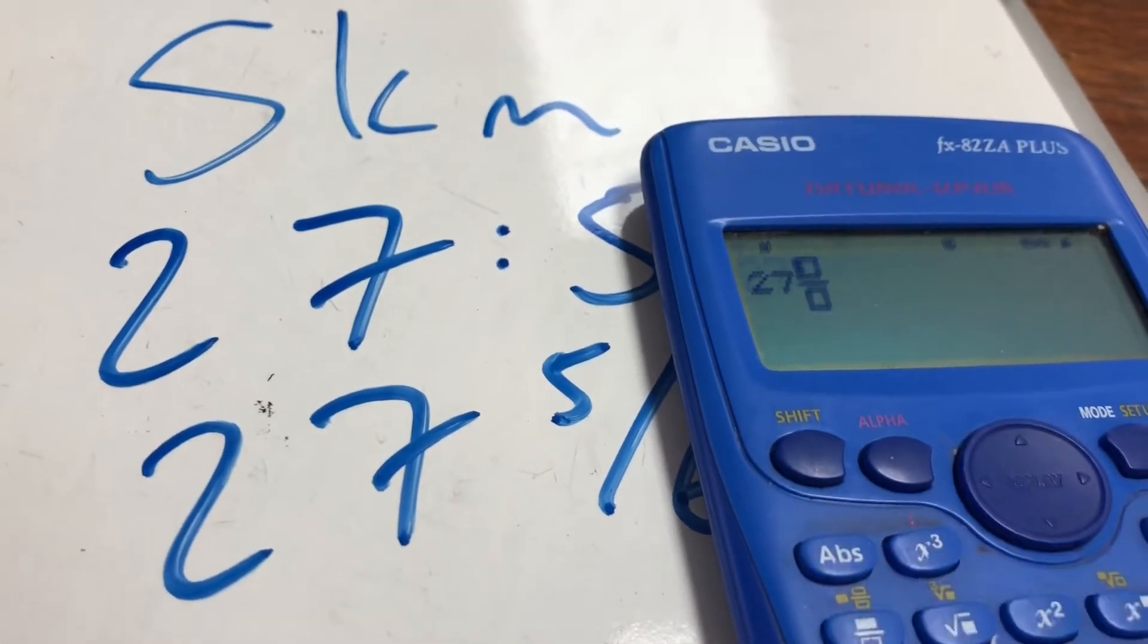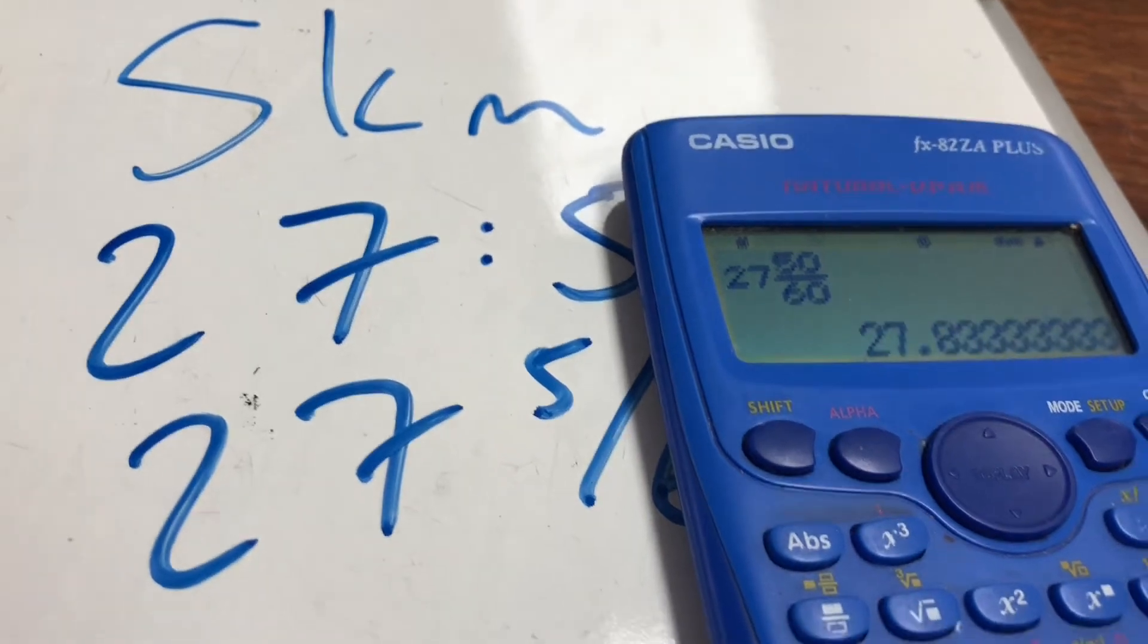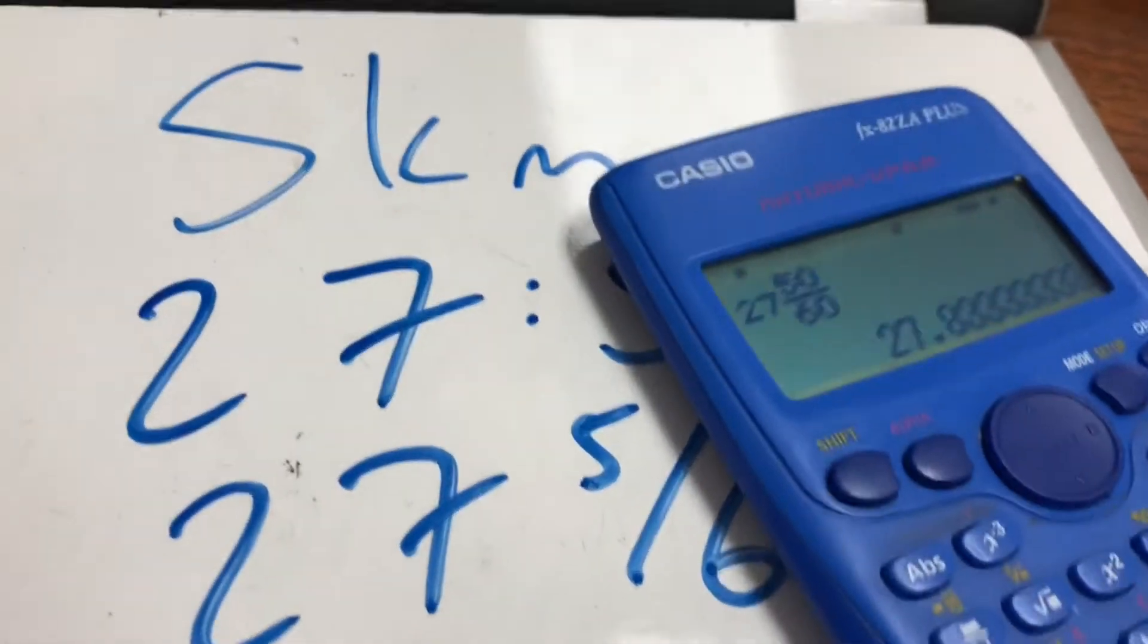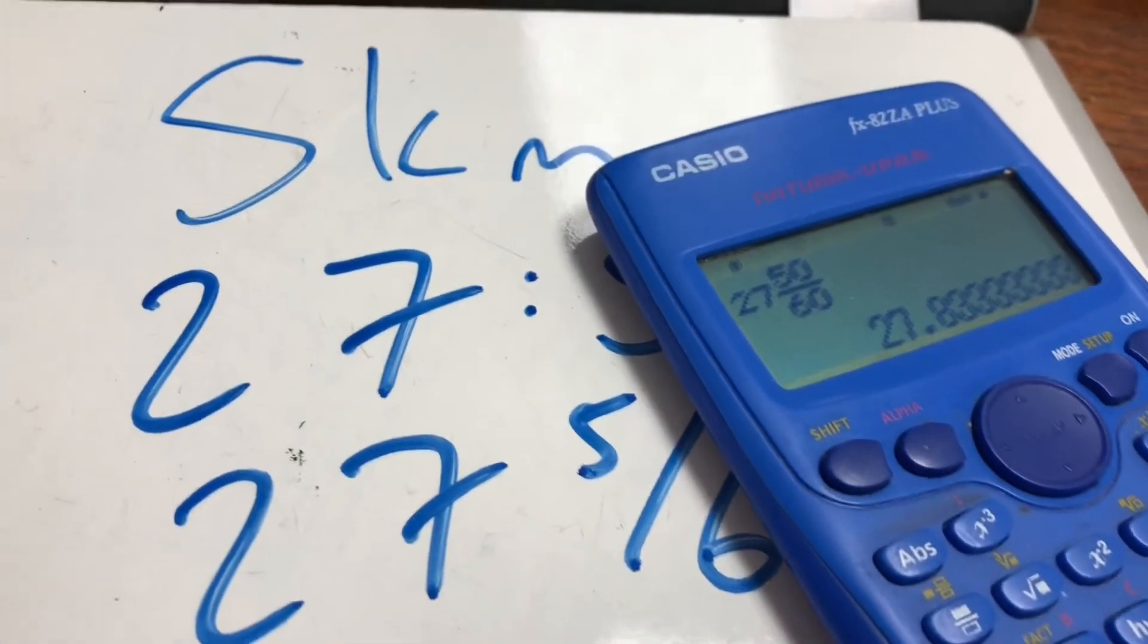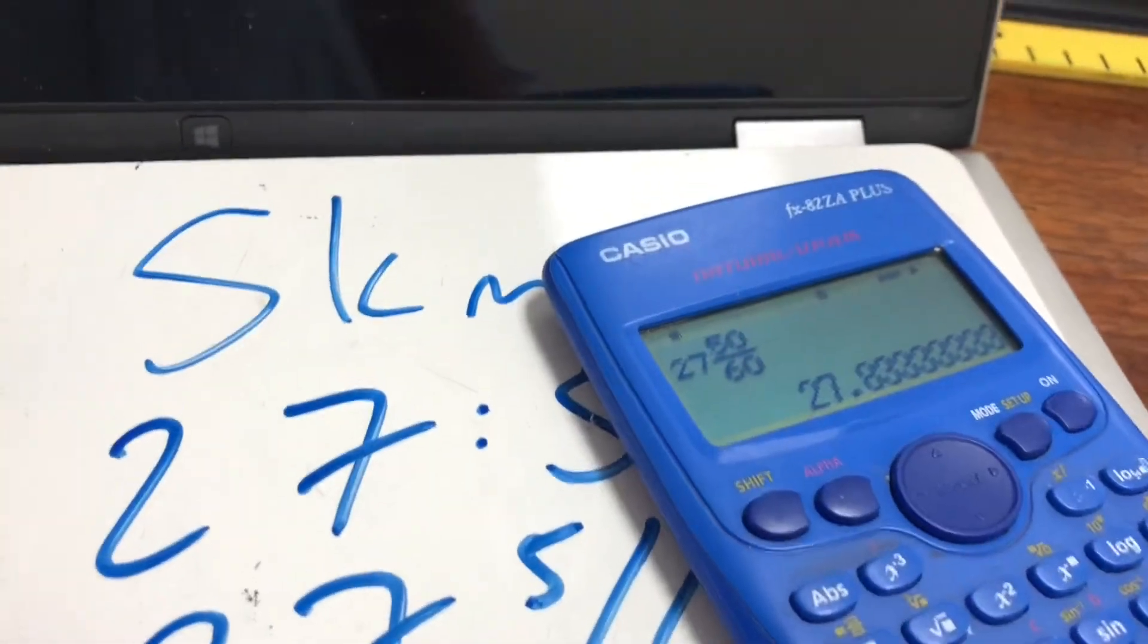27, I use a mixed fraction, 50 over 60, and I get 27.8333 recurring. And then I want to know what my pace is per kilometer.